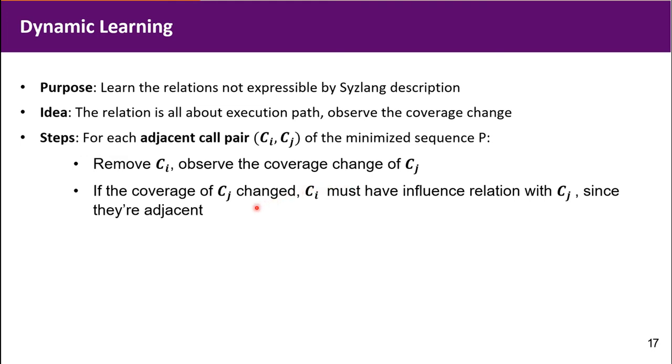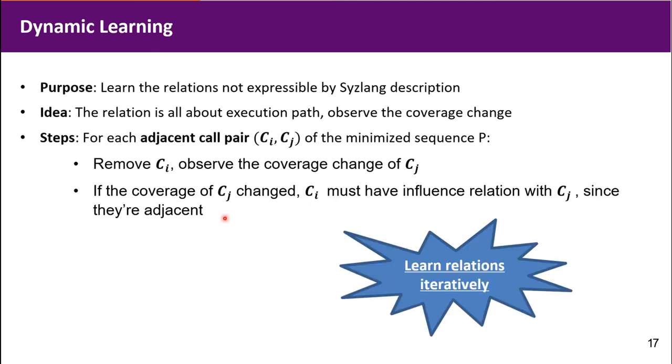Then we observe the coverage of cj. If the coverage of cj changes, then we can say ci must have influence relation with cj, because they are adjacent. The idea is very simple. And we can use this idea to learn relation step by step continuously.